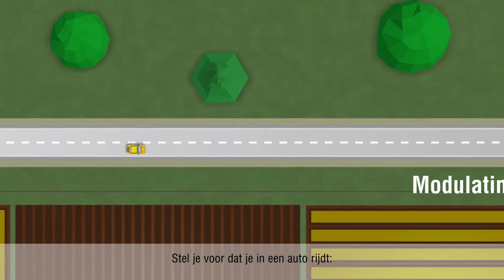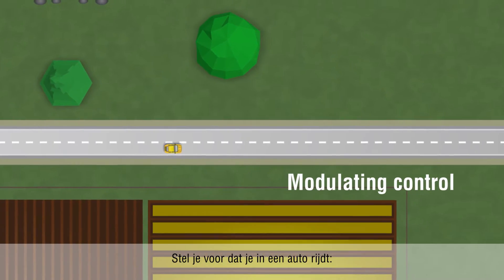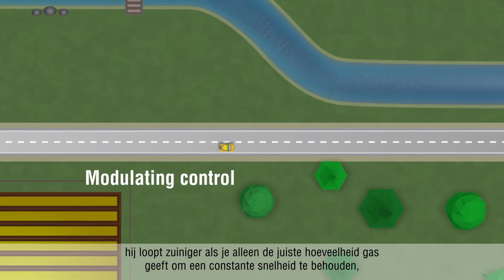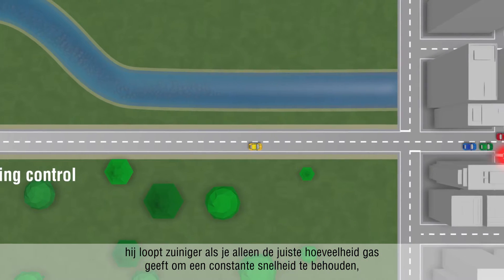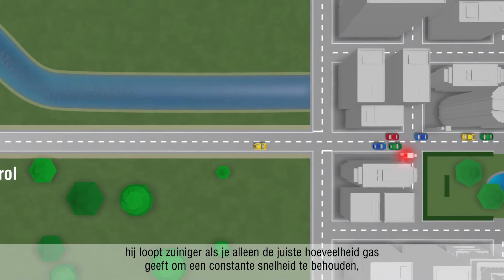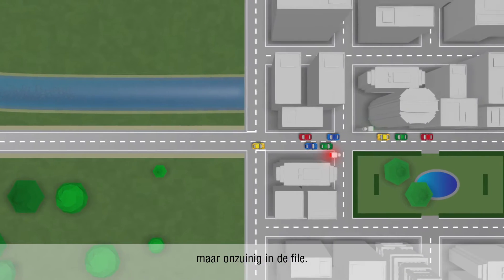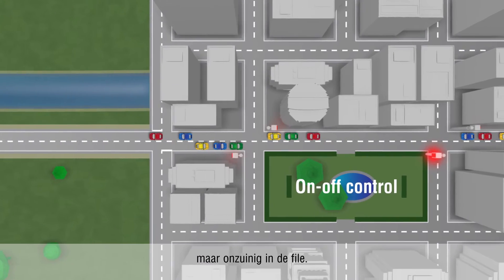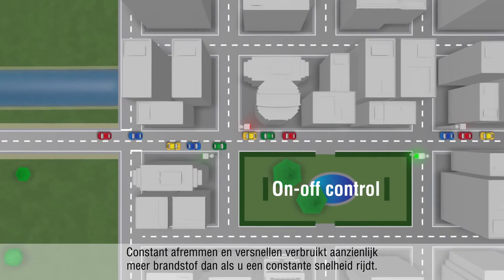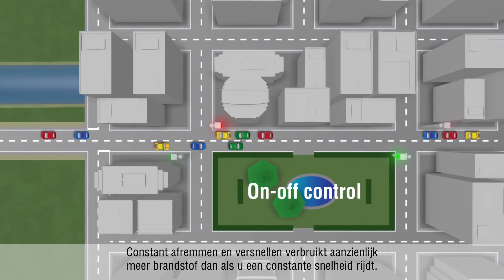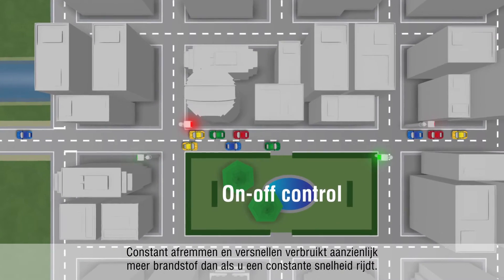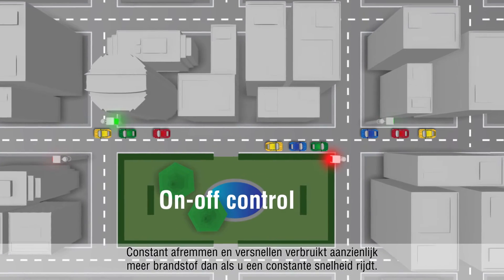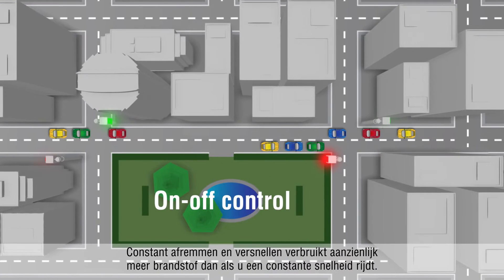Imagine you are driving a car. It runs more efficiently if you only use the necessary amount of fuel to keep a constant speed, but inefficiently when in stop-and-go traffic. Continuous braking and accelerating consumes significantly more energy than maintaining a constant speed.